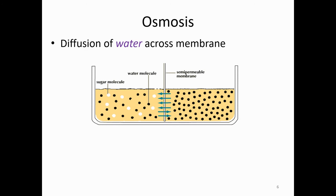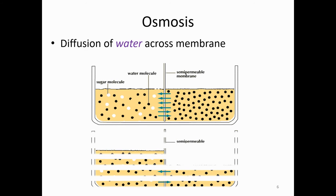Osmosis is just the diffusion of water across the cell membrane. Water is so important to life that we have a specific term, osmosis, for how it gets across the cell membrane. In this picture, the black dots represent water molecules and the white dots represent sugar molecules. On the right side there's a higher concentration of water compared to the left, because the sugar is lowering the concentration of water on that side. So the water should move from the right side to the left side until equilibrium is reached.